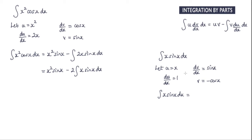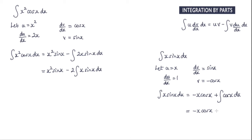u multiplied by v — that's negative x cos x — minus the integral of v multiplied by du by dx, so that's going to be negative cos x. Now this negative I'm going to bring outside the integral with this negative, which will give me a positive, and then I just have cos x dx here. So we have negative x cos x plus the integral of cos x, and the integral of cos x is sin x — so that's plus sin x.